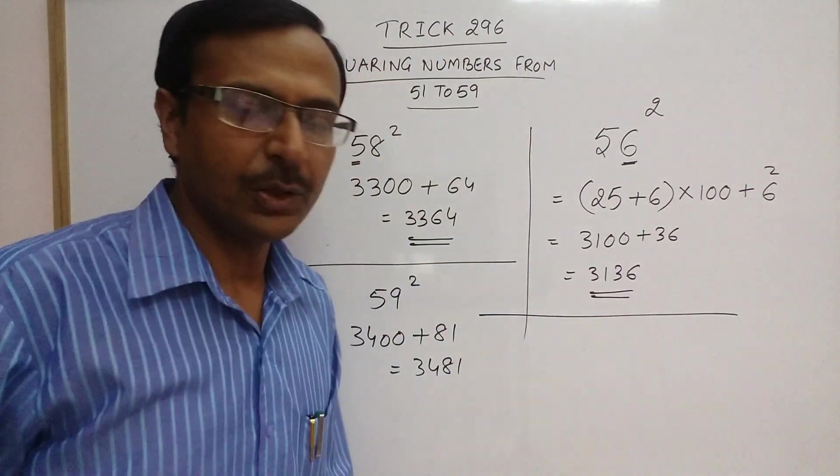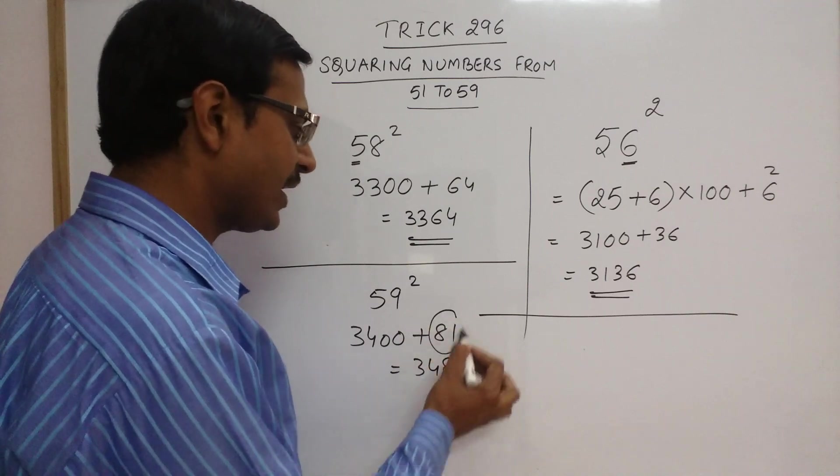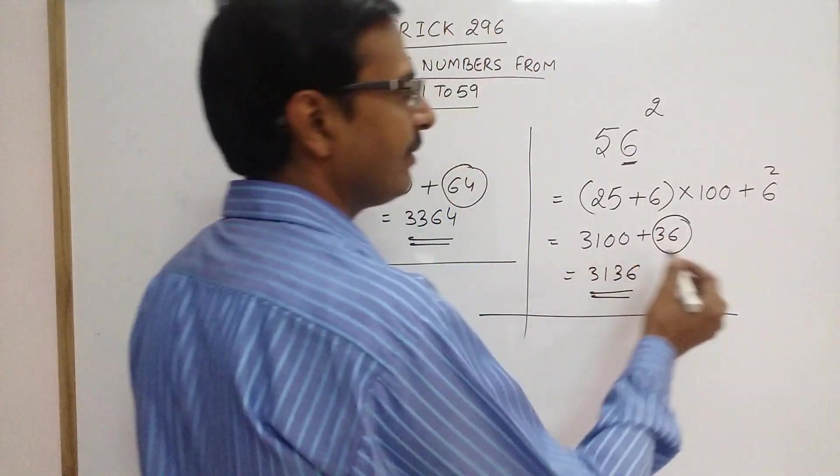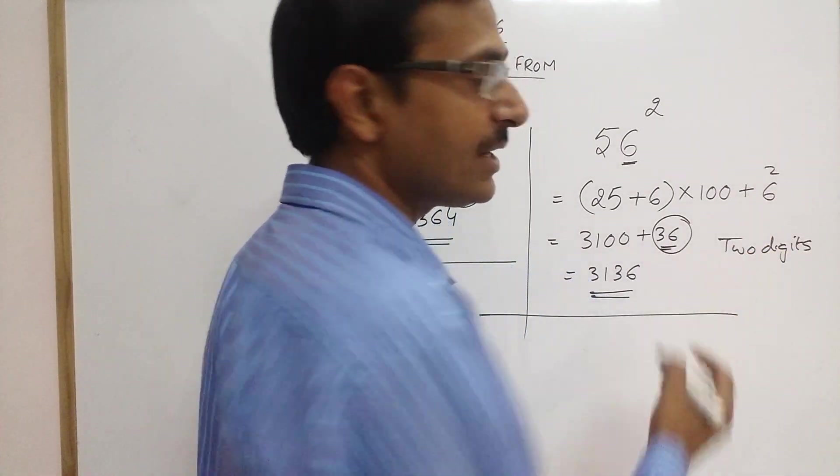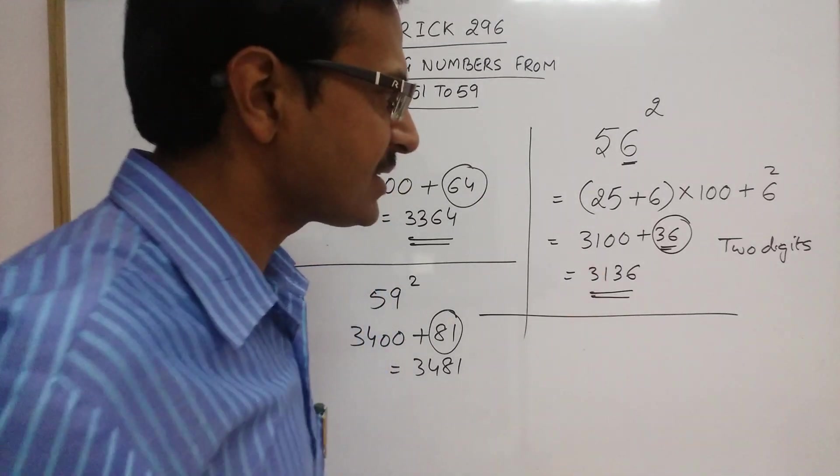One more example. Remember this square which we are adding here, this number should have two digits. So if the square of this number has a single digit, then you should write a 0 prior to that. I will take one example for that.